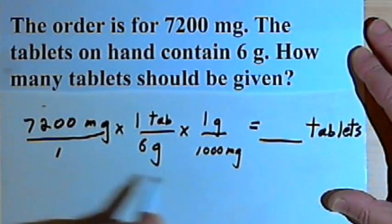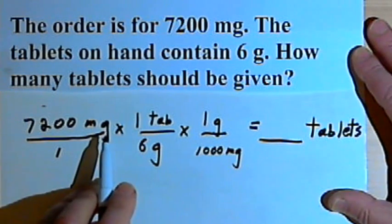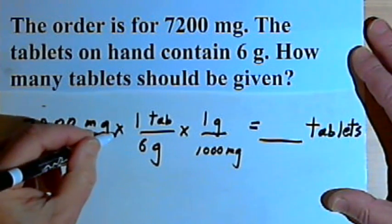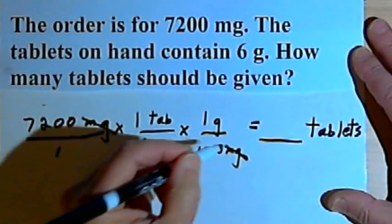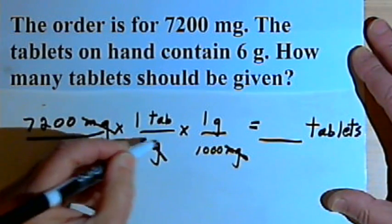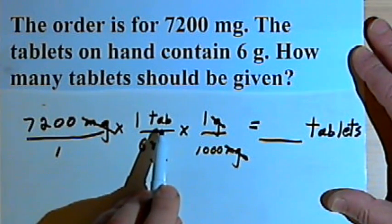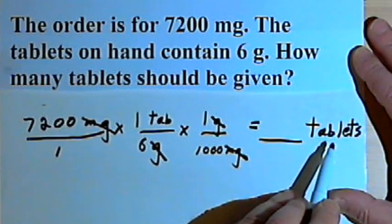And now before I multiply, what I want to do is cancel out whatever units I can. So I can cancel out the milligrams. I've got milligrams in the numerator and the denominator. And I can cancel out the grams, I've got grams in the numerator and denominator. The only unit I'm left with is the tablets, and that's good because I want to end up with tablets.